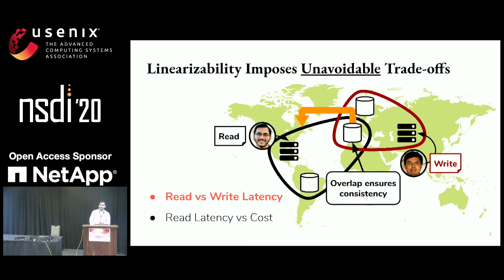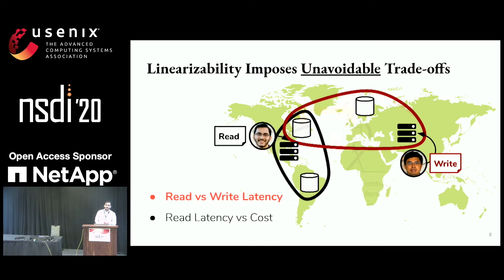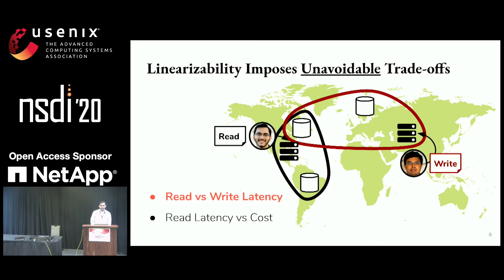What we can do is try moving the data site that's in the overlap somewhere closer to me. If we do this, my read latency improves but Harsha's write latency suffers. There's a fundamental tension between the read latency I can observe and the write latency Harsha can get, and there's a similar trade-off going the other way around.